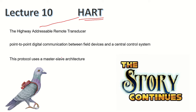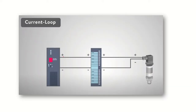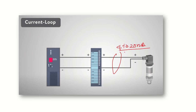Basically, for ages in all measurement loops, they've been using the current loop — this is the most standard method for transmission of industrial parameters. The current loop is normally 4 to 20 milliampere. Using this current loop, the data is transmitted. For a 4 to 20 milliampere current loop, a simple two-wire setup is sufficient; it is quite cost-effective and very simple to use.